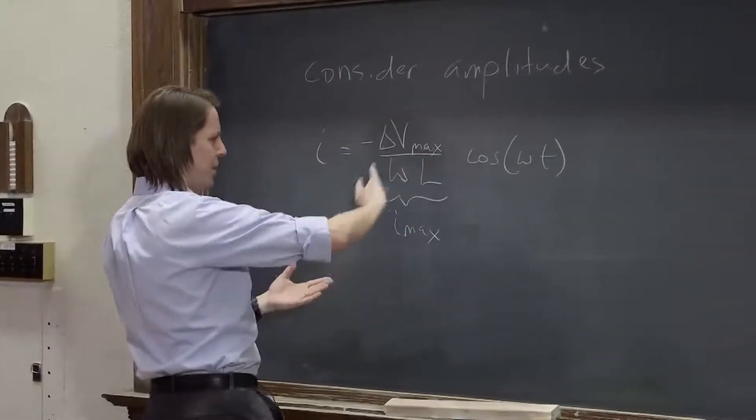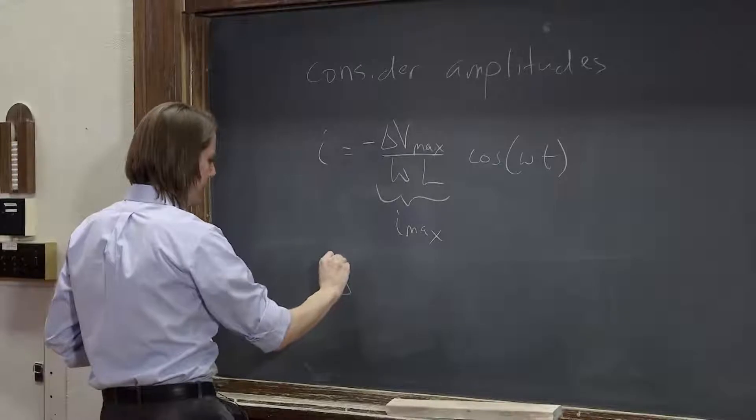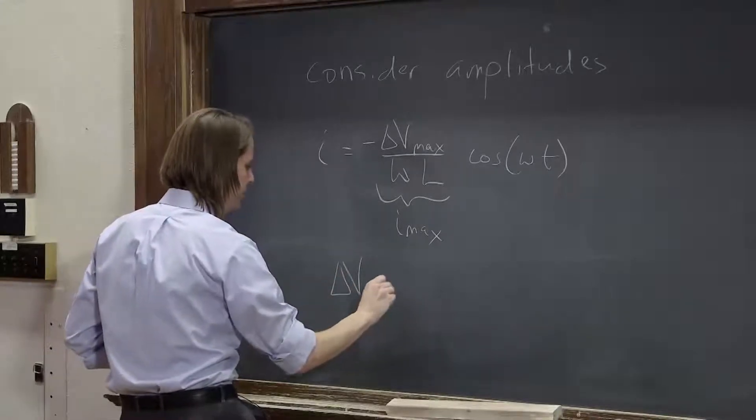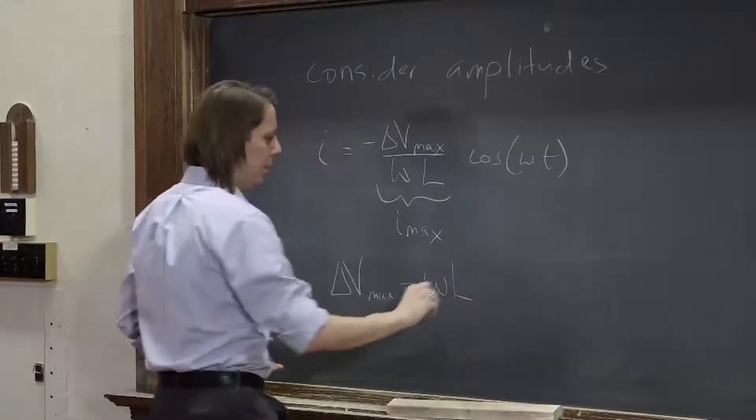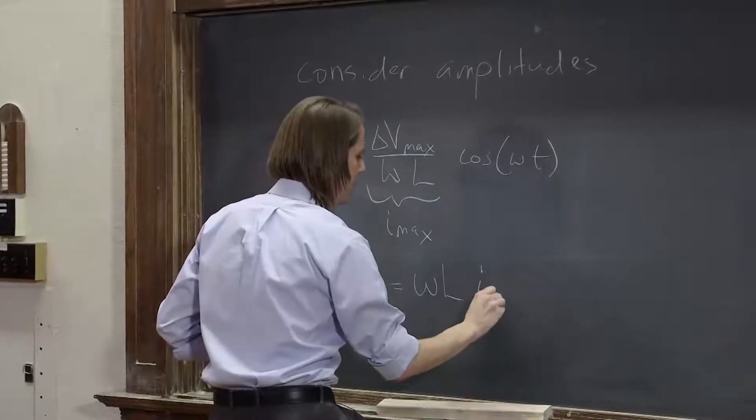So if we equate those and bring the omega L over, you find delta V, its amplitude, is equal to omega L times the current amplitude.